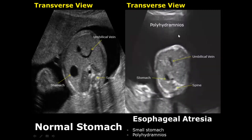In this image we see polyhydramnios — a large accumulation of amniotic fluid due to improper swallowing. The stomach here is appearing small, due to gastric secretions, which are the stomach's own secretions. That is why it is appearing small, and this setting can occur in esophageal atresia.